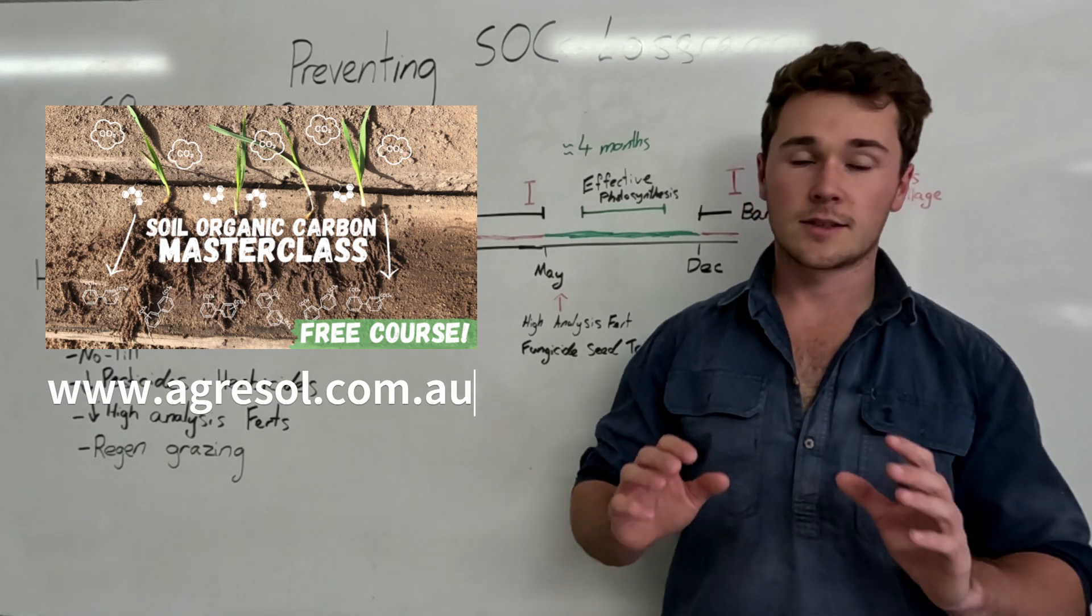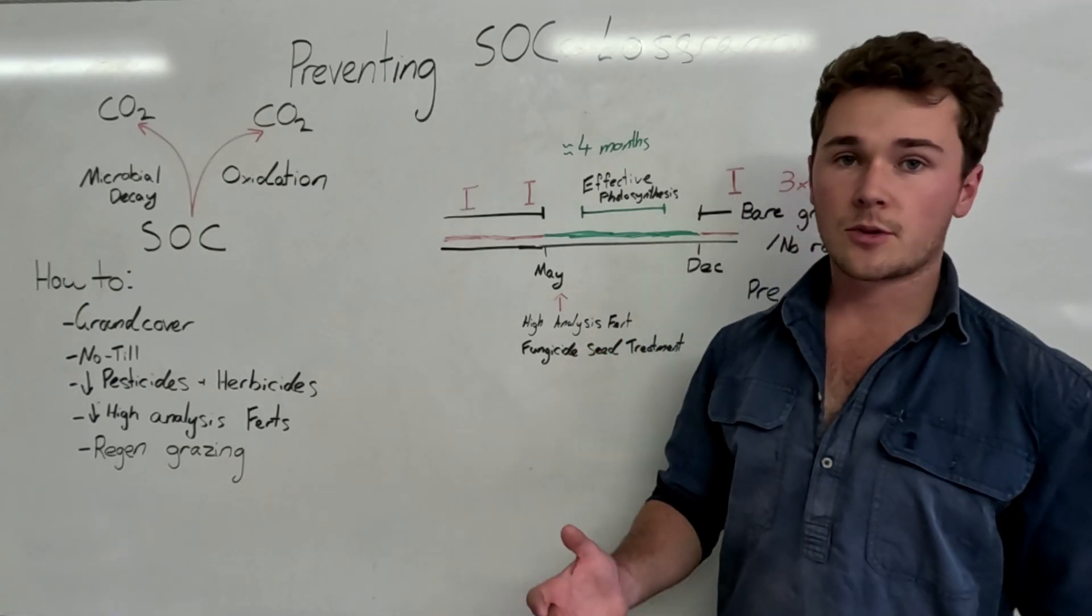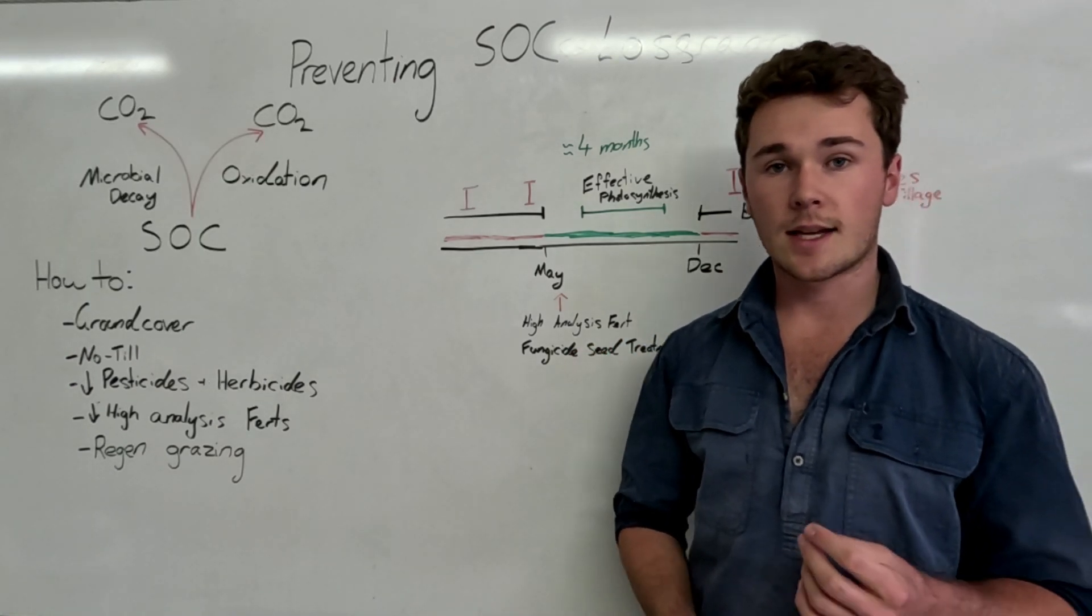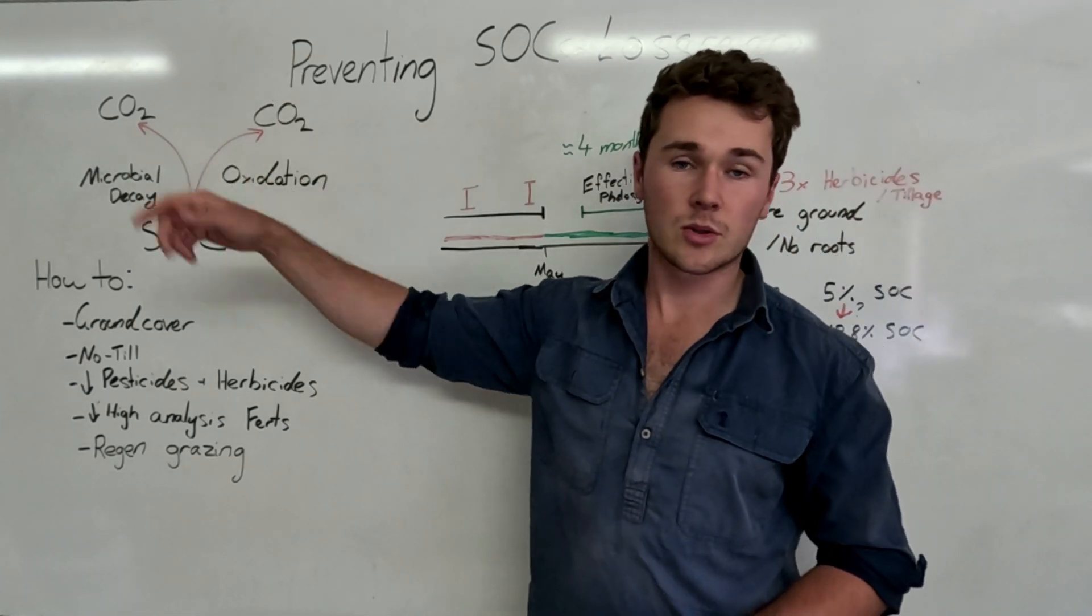Again, completely free, there's not even an email opt-in, it's just free information. Anyways, let's get into it. So there's only really two ways that soil organic carbon can be lost, of which it turns into carbon dioxide back into the atmosphere.